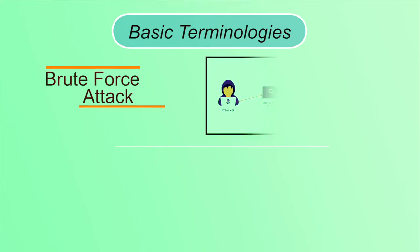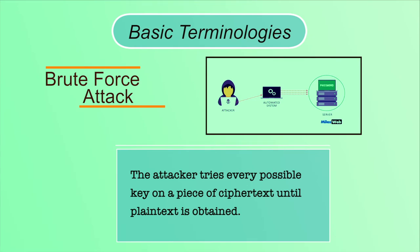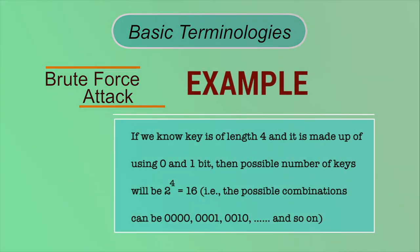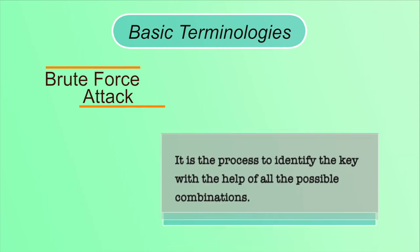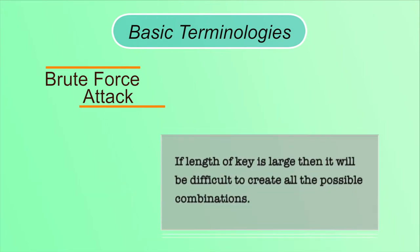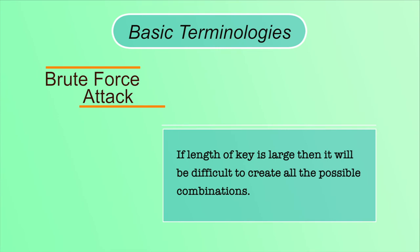In a brute force attack, the attacker tries every possible key on a piece of ciphertext until plaintext is obtained. For example, if the key is of length 4 and made up of 0 and 1 bits, the possible number of keys is 2 to the power 4, which equals 16 — combinations like 0000, 0001, 0010, and so on. If the length of the key is large, it will be difficult to create all possible combinations. Cryptanalysis is the process of converting ciphertext to plaintext without the knowledge of the key — also known as code breaking.